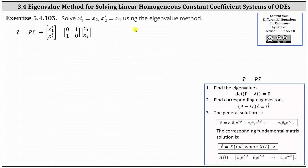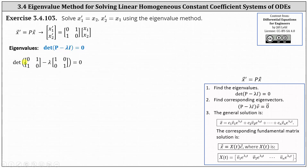To use the eigenvalue method, the first step is to determine the eigenvalues of matrix P. To do this, we set up the equation: the determinant of the difference of P and lambda I equals zero, and then solve for lambda. We have the determinant of matrix P minus lambda times the two by two identity matrix equals zero.